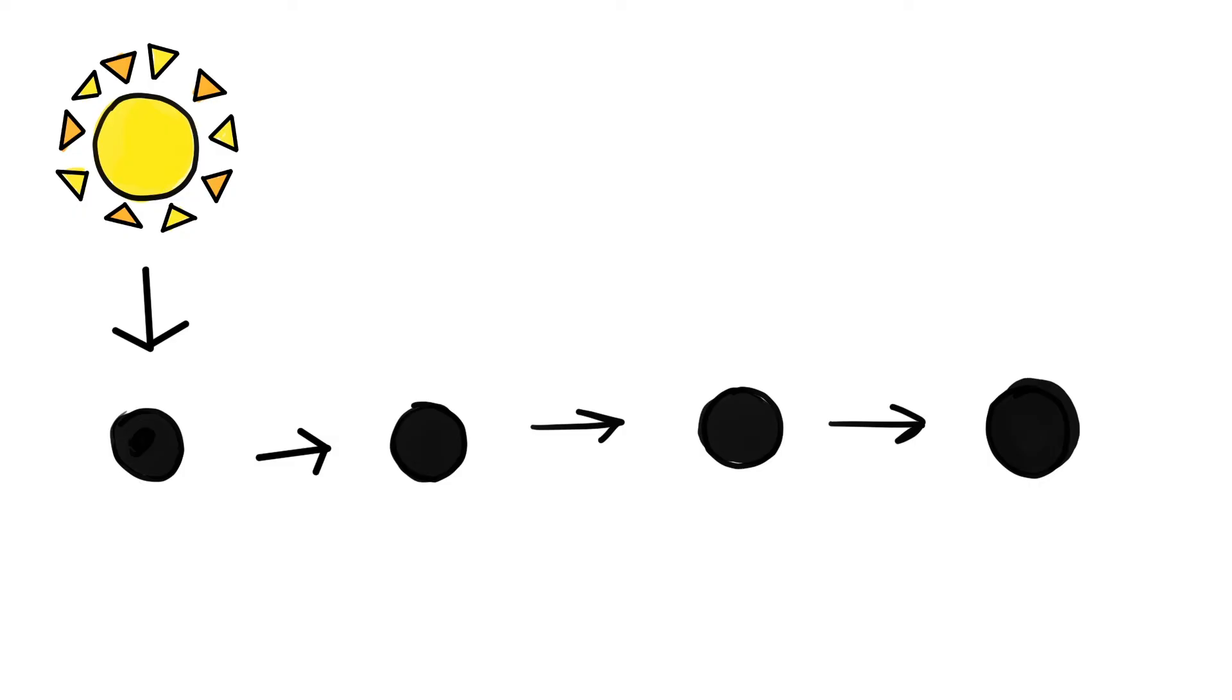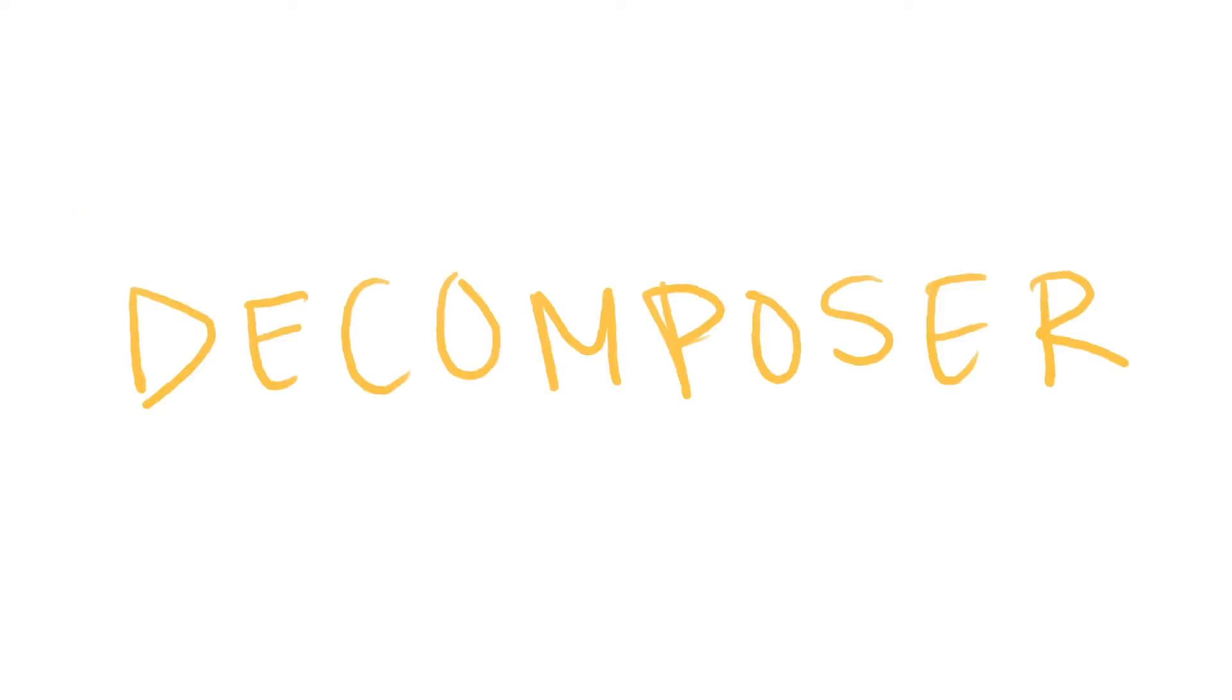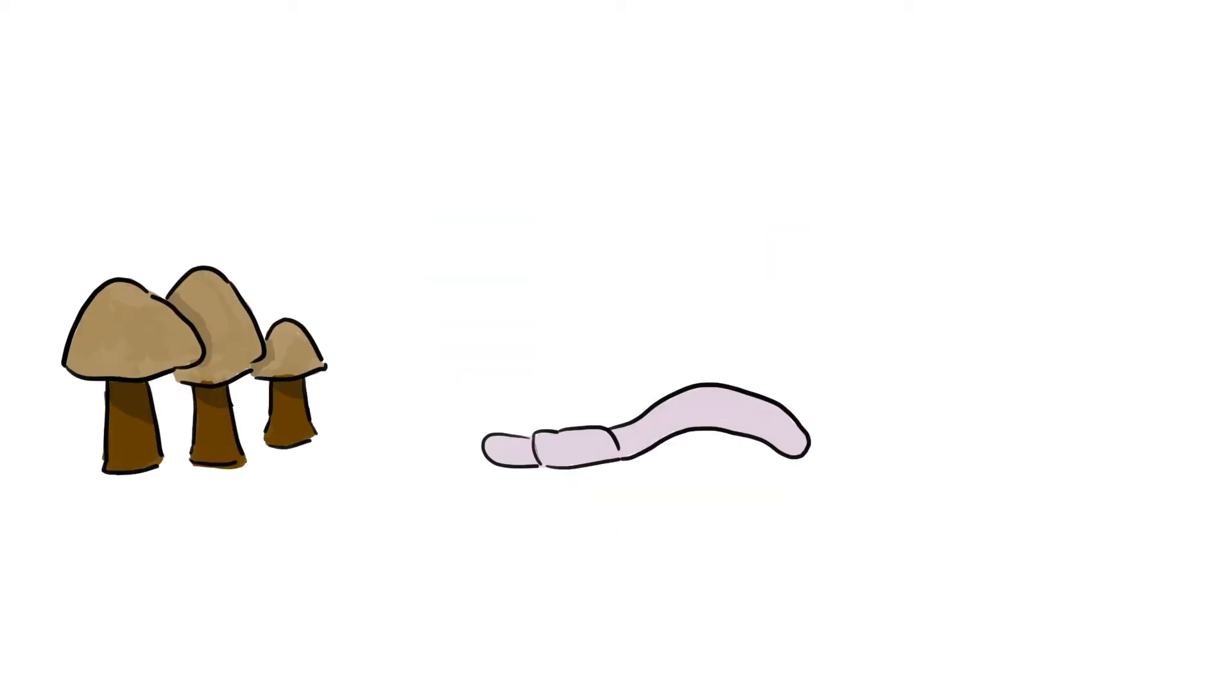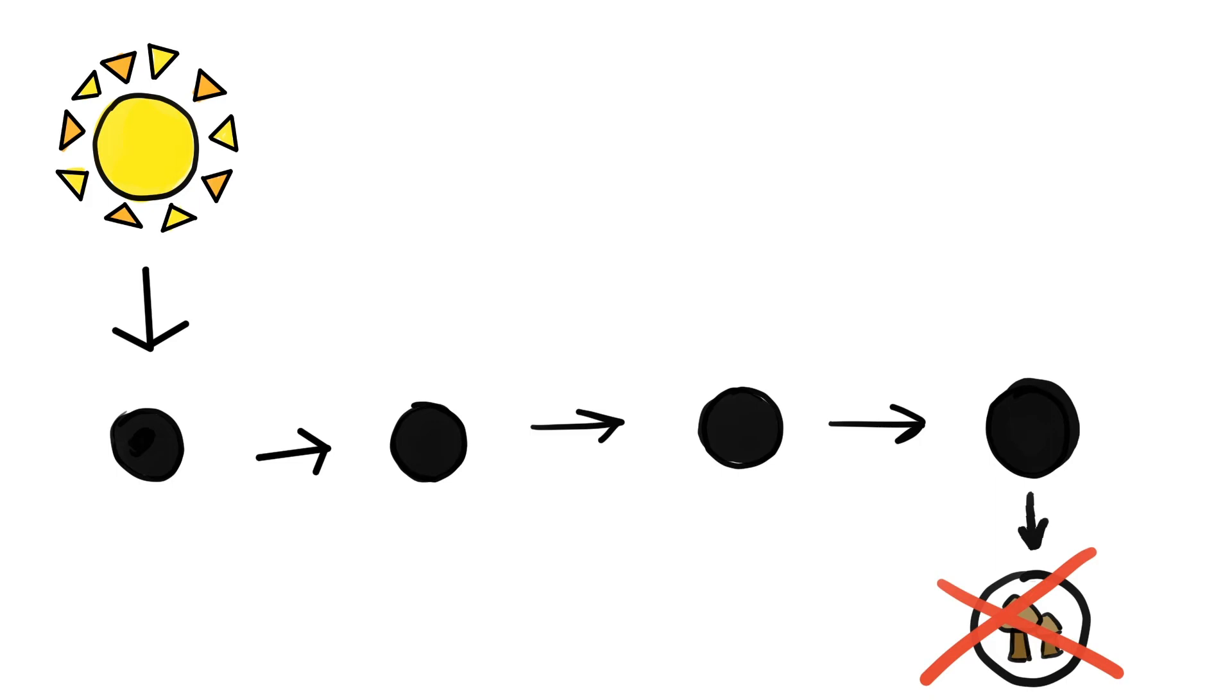Another thing we need to talk about is the decomposers. In a food chain, decomposers help break down dead or decaying organisms and recycle the nutrients into the soil for the producers to use. Some common examples of decomposers include mushrooms, worms, and insects like flies. Since decomposers can break down anything that is dead, we can't just put decomposers at the very end of the food chain. Instead, we have to put decomposers along the side of the food chain, like this.